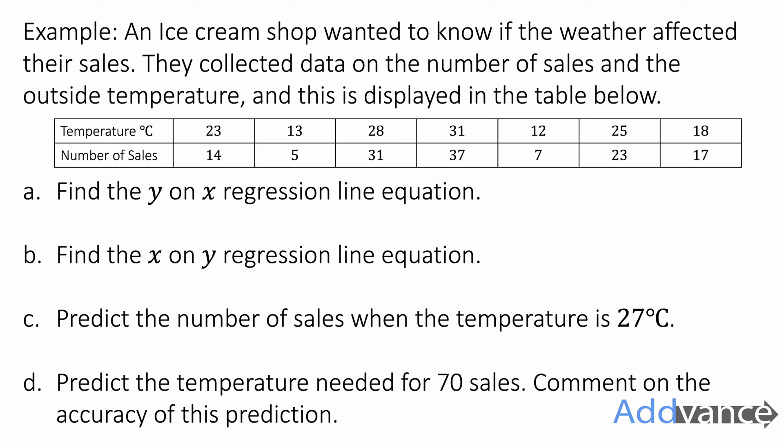Now we are going to find the y on x regression line and the x on y regression line equation. We're going to predict the number of sales when the temperature is 27 degrees and we're going to predict the temperature needed for 70 sales and then it asks us to comment on the accuracy of this prediction.